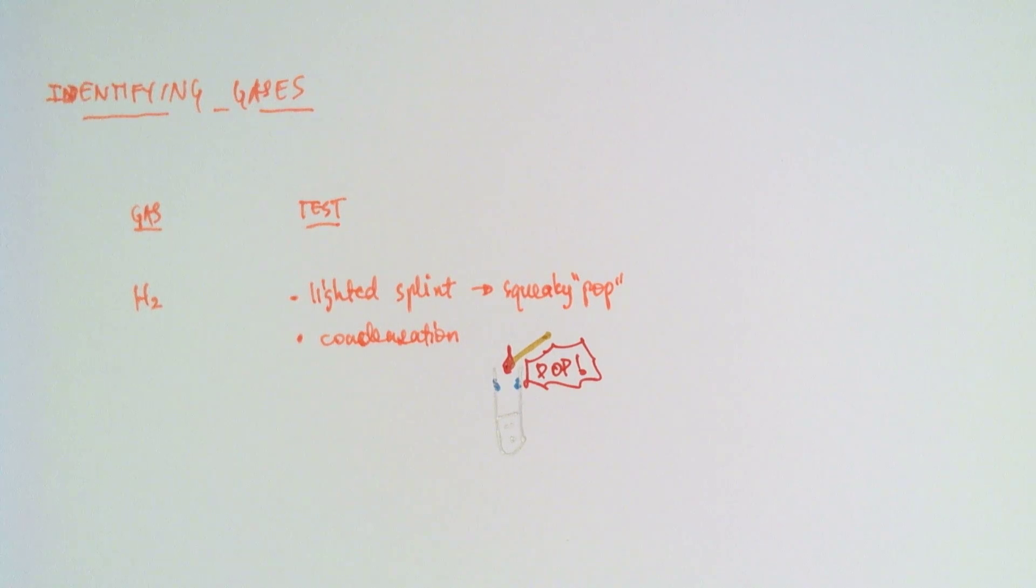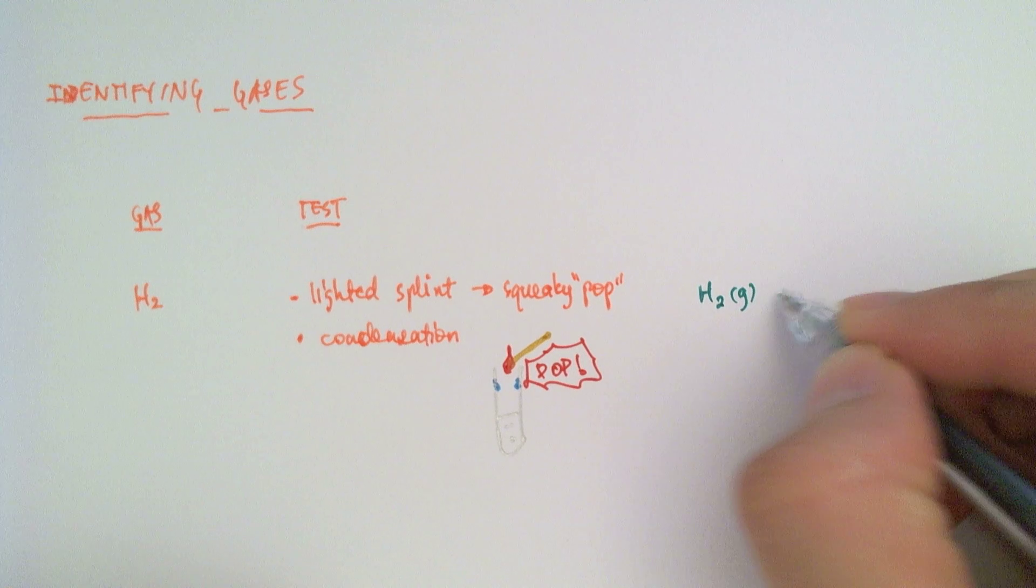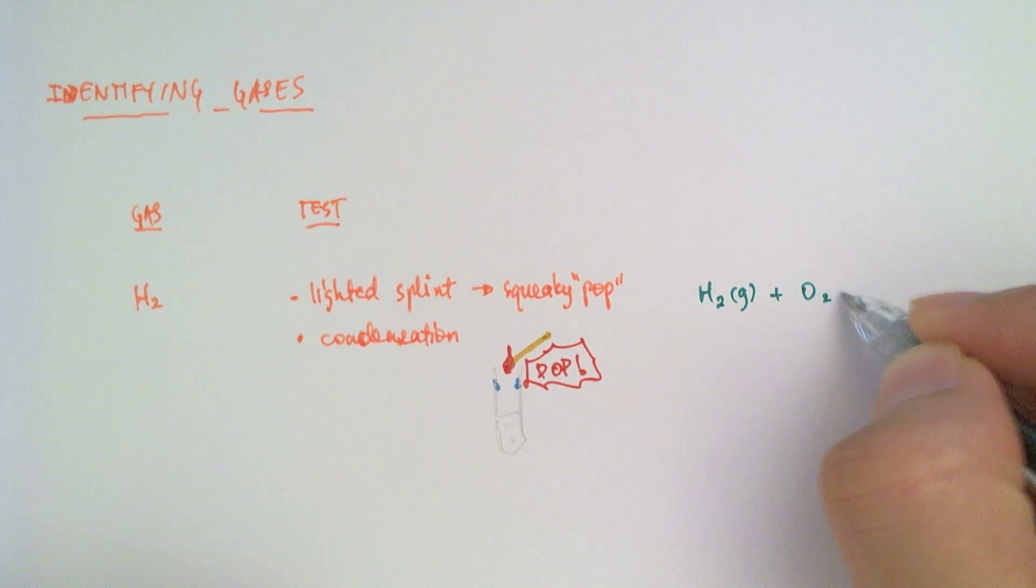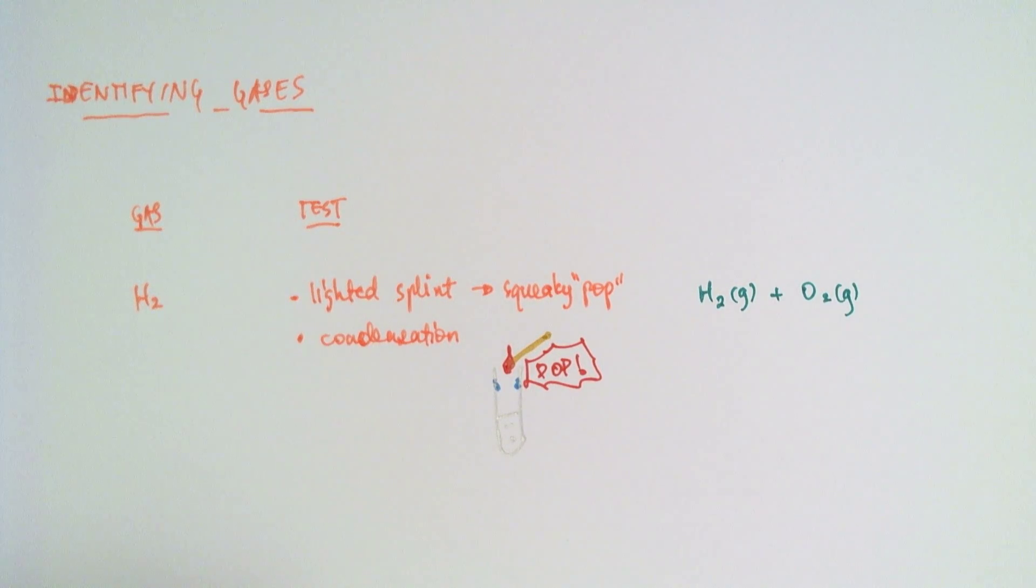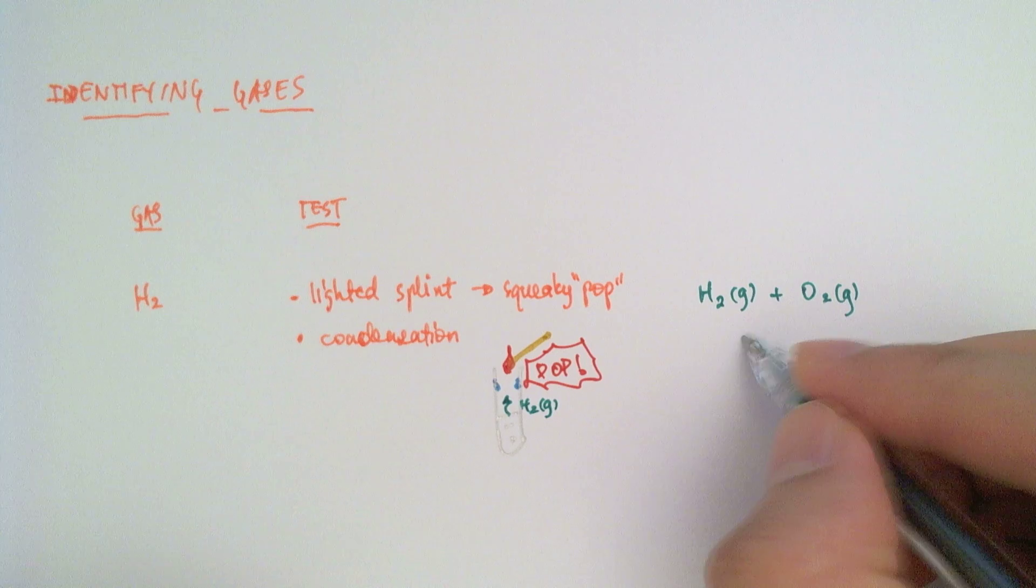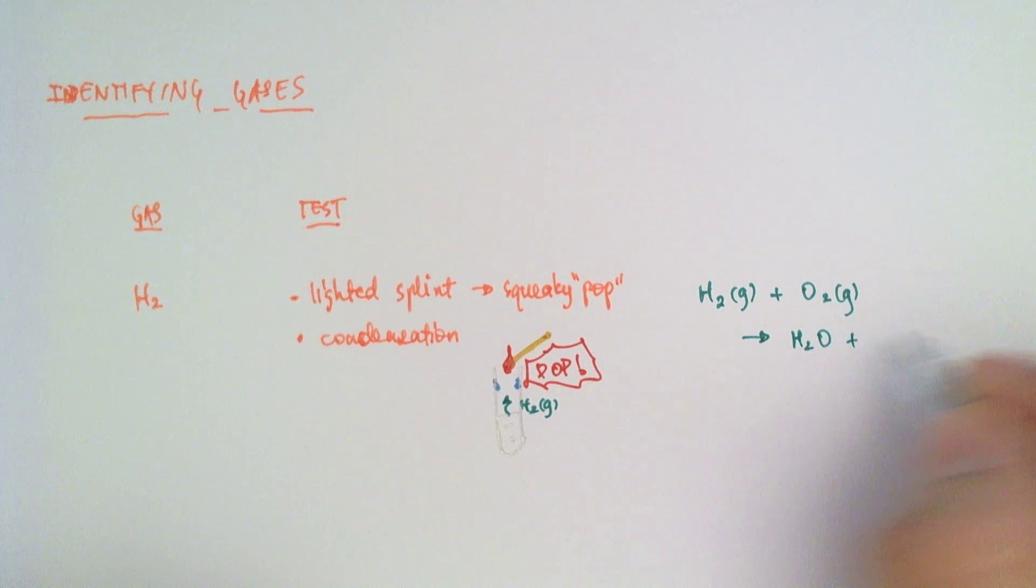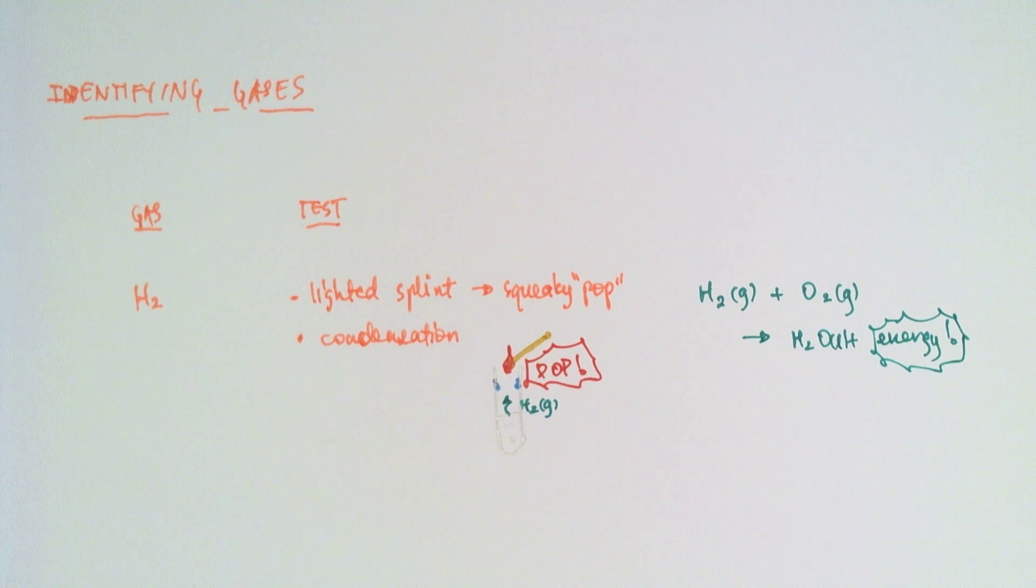What's happening here is that the hydrogen gas is reacting with oxygen in the air, right? Because the fire provides the energy to combine the hydrogen gas being liberated from our reaction here to combine with oxygen to form water. Hence the condensation here. And this reaction releases some energy, which is what gives us that pop sound.